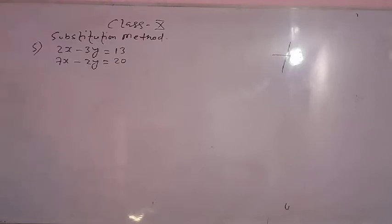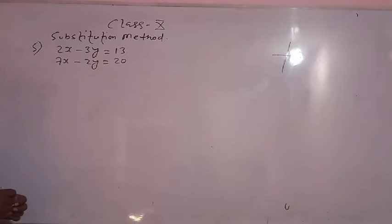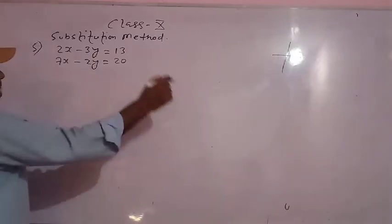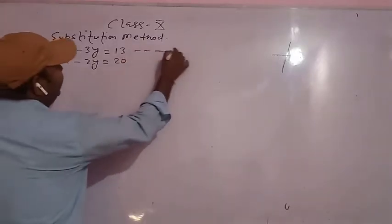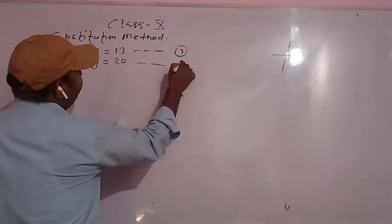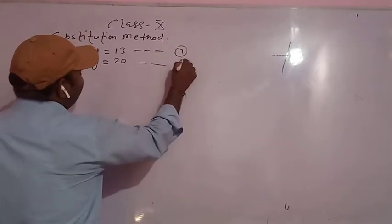Now let's see question number 5. That is: 2x minus 3y is equal to 13, and 7x minus 2y is equal to 20. This will be the first equation and this will be the second.